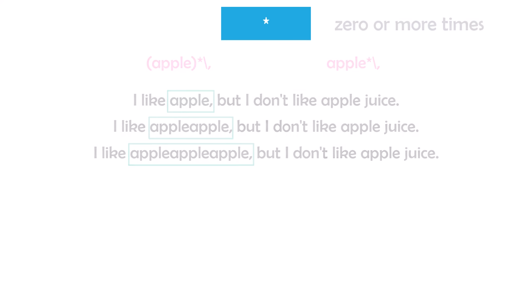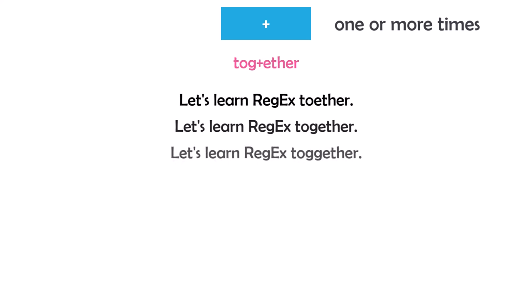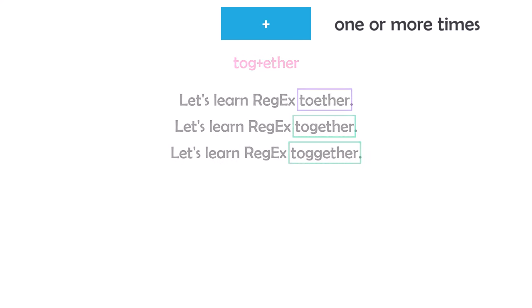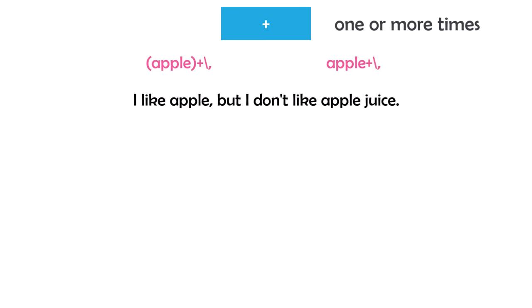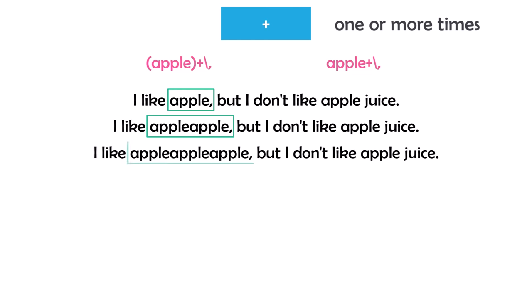The plus quantifier specifies that the preceding character or group should occur one or more times. Using plus after G means G must exist at least once. So I will get the word 'together' from texts where G appears at least once, but not from the text where G doesn't exist. Plus defines that a string exists at least once, and we can also use it to find a word followed by a specific character.